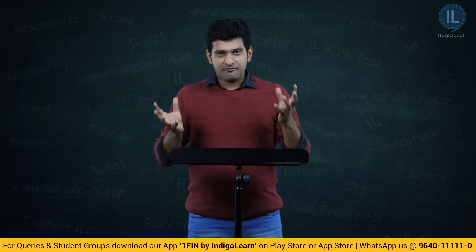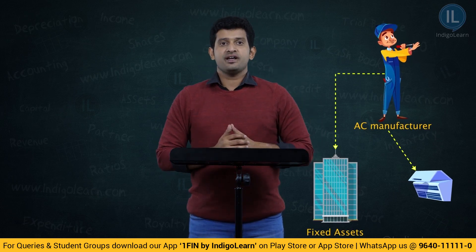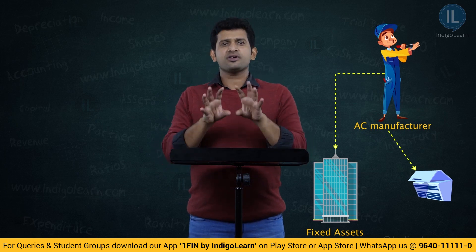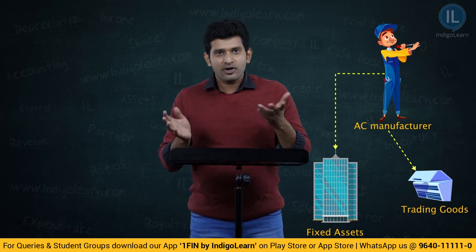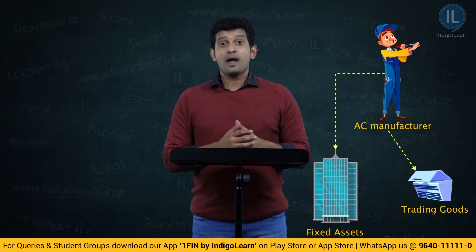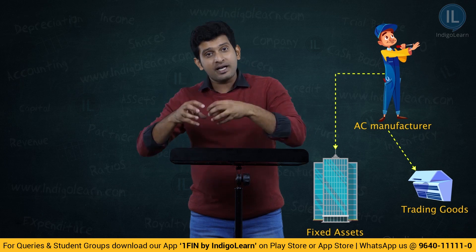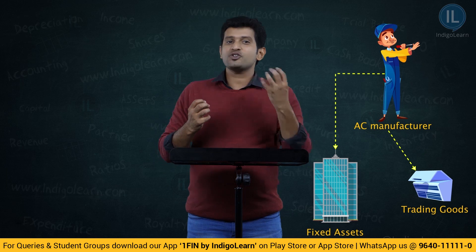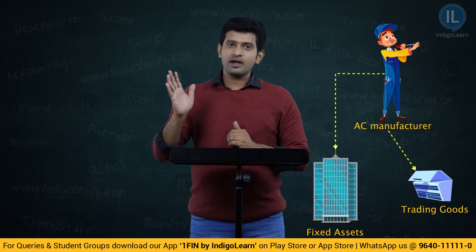For example, if I purchase a building for the company, my business is not to buy and sell buildings — that is a fixed asset. But for a manufacturing concern, say I want to manufacture an AC. I may buy a building and a factory, but I will not buy and sell those — they are my fixed assets. However, all the components of an AC which will become the complete product are meant for trading — they will be bought and sold. Therefore, those assets which are meant for the purpose of trading only will be considered as current assets.